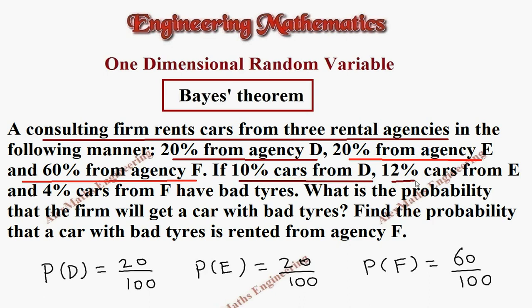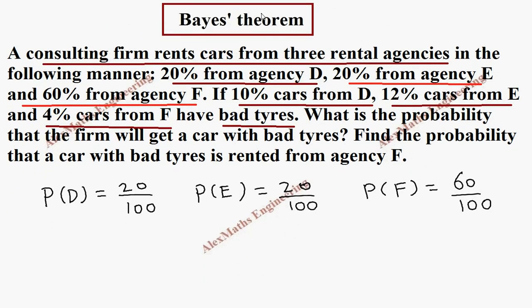Then further, 10% cars from D, 12% cars from E, and 4% cars from F have bad tires. Let's take the bad tires as B. So P of B given D—from agency D what is known already should come in the denominator. The bad tires we name it as B, which is from the given question 10%, so it is 10 by 100.